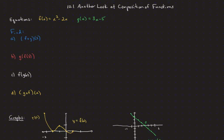We have our function f(x) in yellow and g(x) in green. On part a, we want to find f composed with g of 3 — often read as fog of 3 — which means the same thing as f of g of 3. So g(3): we plug into g(x) and get 3 times 3 minus 5, which is 9 minus 5, equals 4.